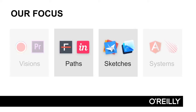As prototypers, our focus is on making things as real as possible, as quickly as possible. That means in this course our focus will be upon the middle of the spectrum: paths and sketches. On the left, visions fall short on our requirements for realness, while systems fall short on speed. But with a combination of paths and sketches, there's little we can't create.